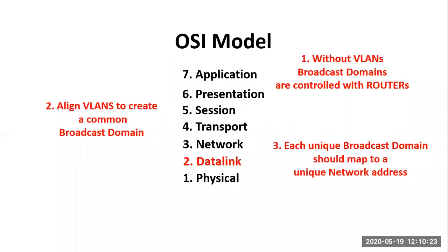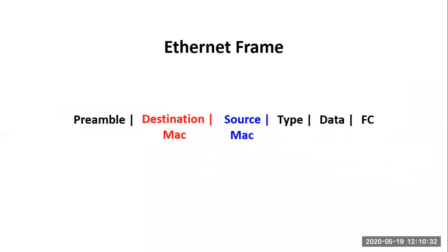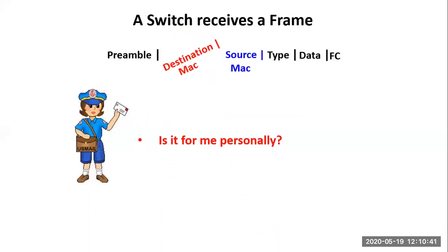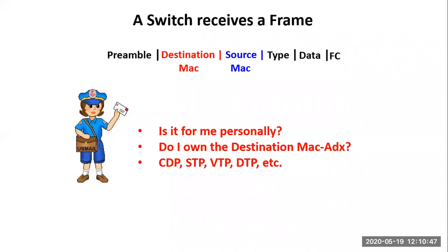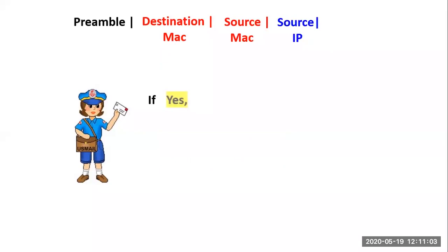Each unique VLAN should map to a unique broadcast domain, and each unique broadcast domain should map to a unique network. Going back to the Ethernet frame, we're going to track that frame as it arrives inside a layer two device. When the layer two device receives the frame, it will inspect the destination MAC and ask: is it for me personally? There's a lot of inter-switch link communication — things like CDP, STP, VDP, DDP, etc. Also, if I own it at layer two, it's possible I own it at layer three, and it might be telnet, ping, traceroute, etc.